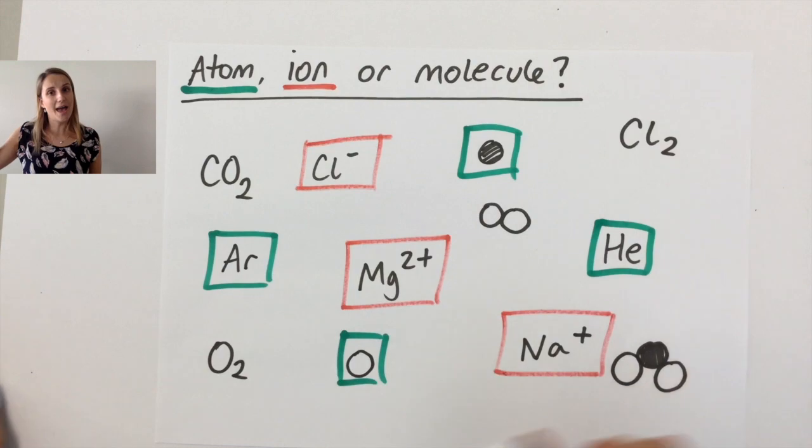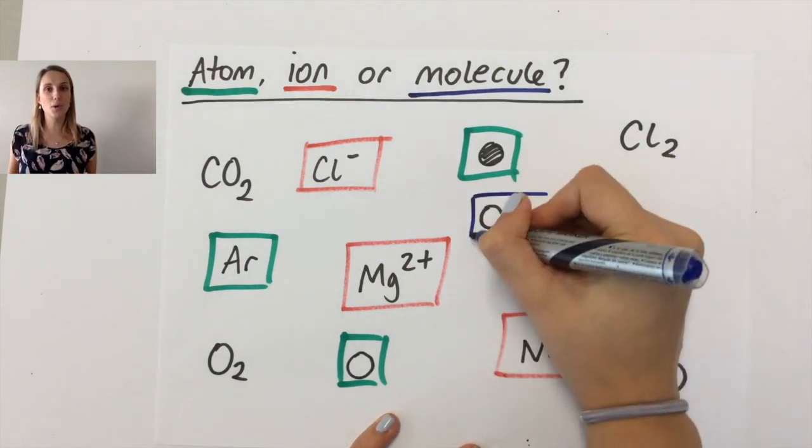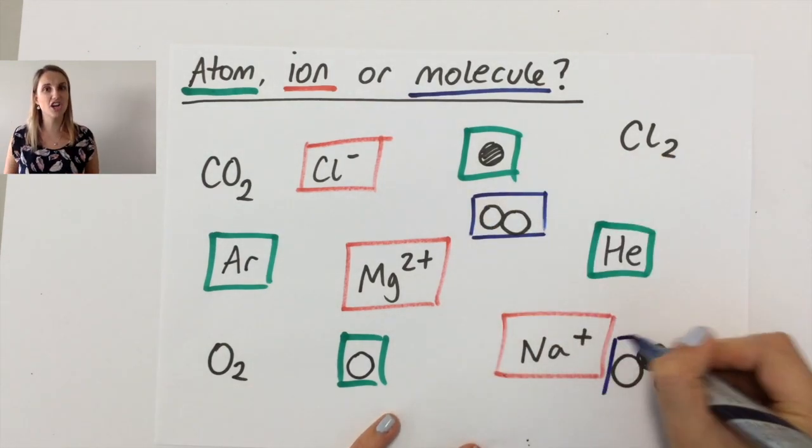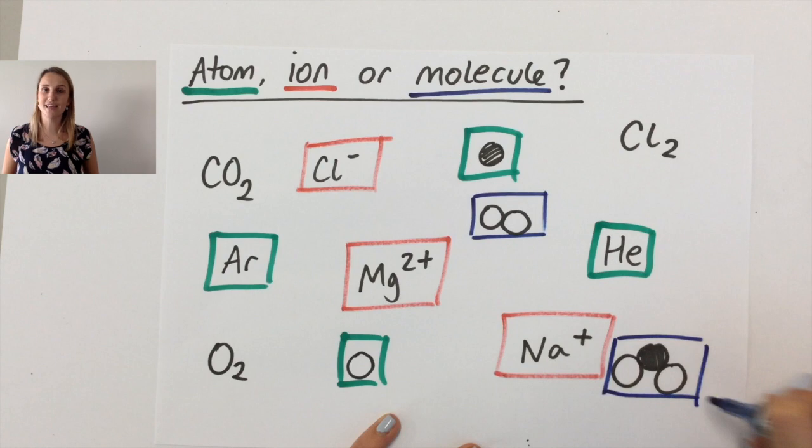You can see the two empty circles bonded together make a molecule. They're covalently bonded together. But equally, the three at the bottom, where one is shaded in a different colour, also represent a molecule, just a molecule that contains different elements this time.